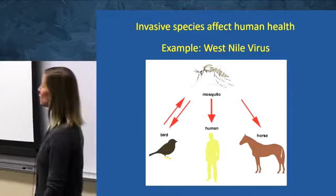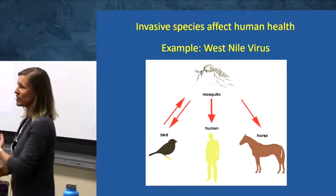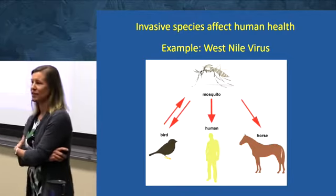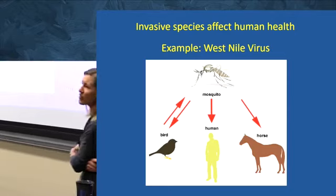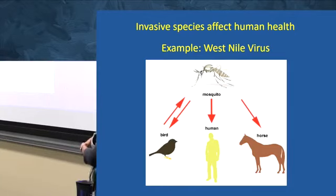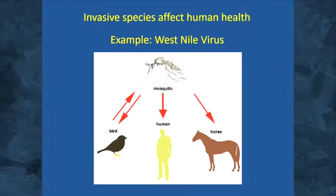I want to briefly go over some of the deleterious impacts that invasive species can have. Some estimates suggest maybe one to two percent of all invasive species do have deleterious impacts — so it's not the vast majority. Most species out there are not having any sort of discernible impact that we know of.